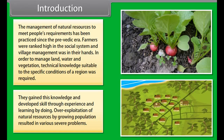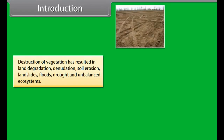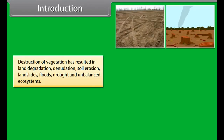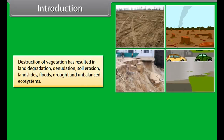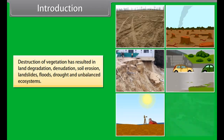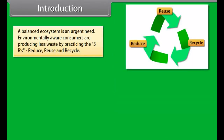Overexploitation of natural resources by growing population resulted in various severe problems. Destruction of vegetation has resulted in land degradation, denudation, soil erosion, landslides, floods, drought and unbalanced ecosystems. A balanced ecosystem is an urgent need.